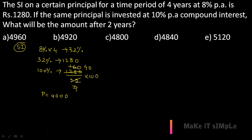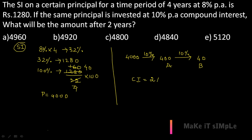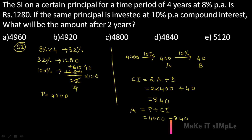The same principal of 4000 is invested at 10% compound interest. 10% of 4000 = 400 (this is 'a'), and 10% of 400 = 40 (this is 'b'). Compound interest for two years = 2a + b = 2 × 400 + 40 = 840. The question asks for the amount after two years. Amount = principal + compound interest = 4000 + 840 = 4840.